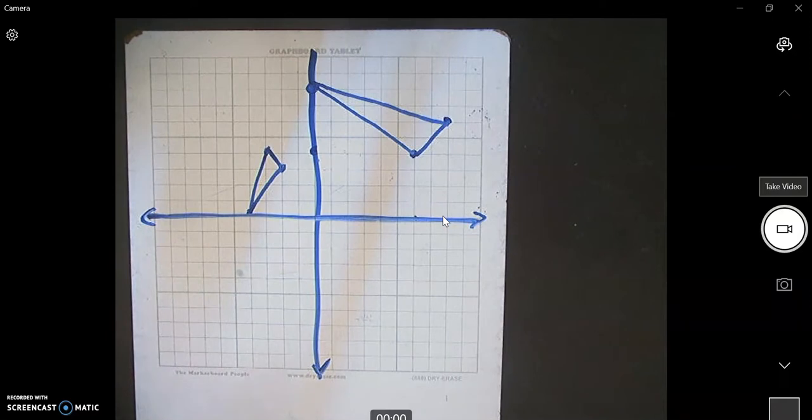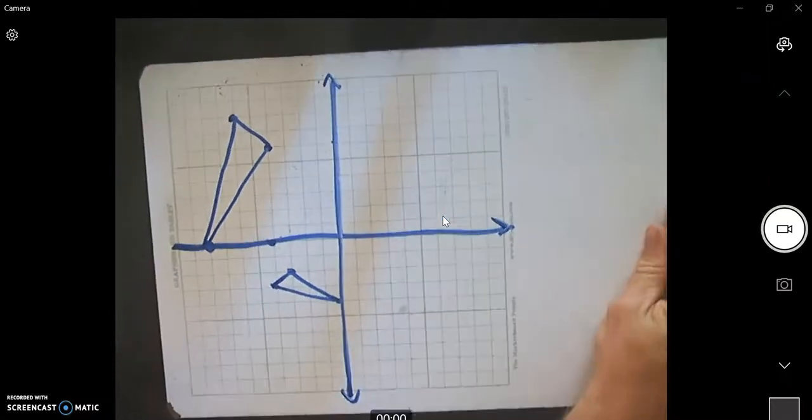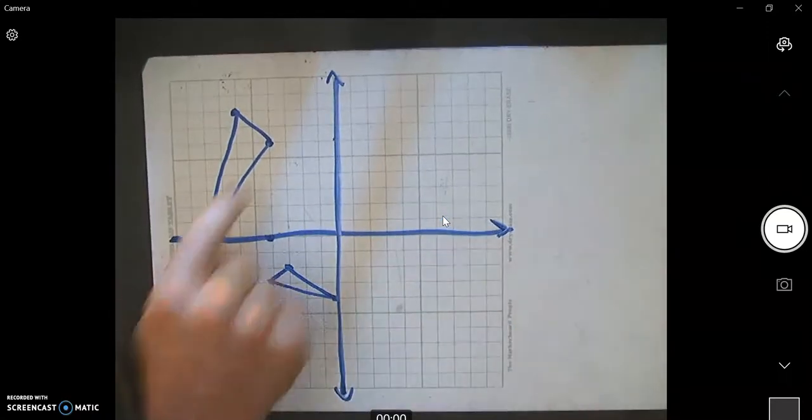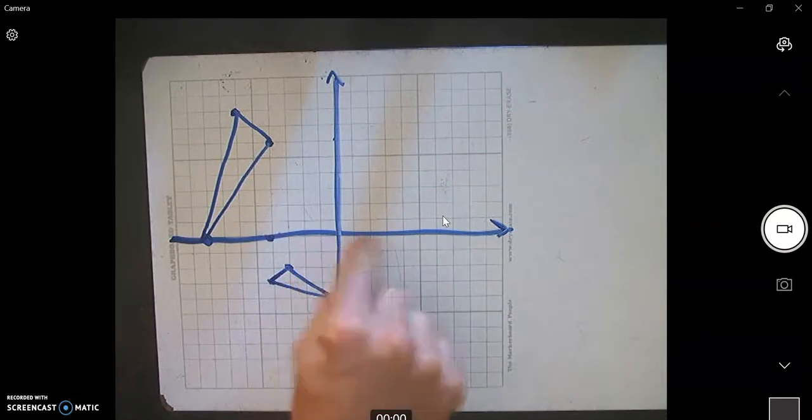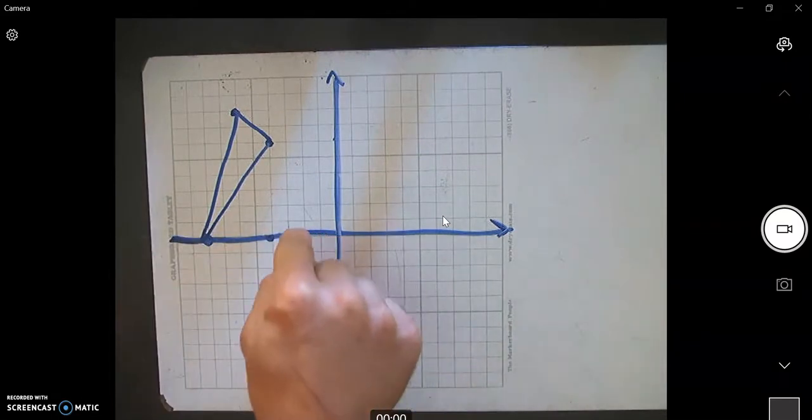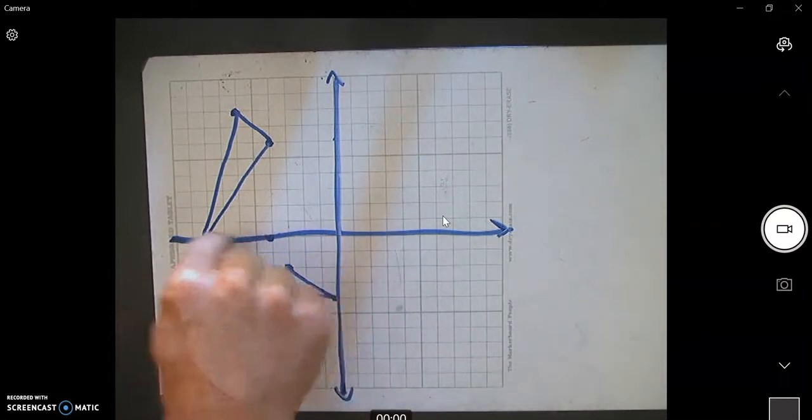And so when we transform, what we're going to do is we're going to go from 90 degrees, we're going to take it and rotate it, and just kind of count each spot. So we're going to look at this triangle. So we have 0 on the x-axis, and we go over 1, 2, 3, 4, 5, 6, 7, 8.